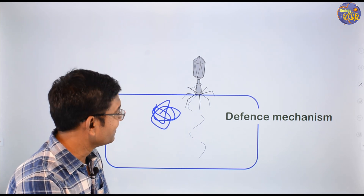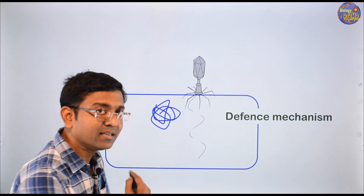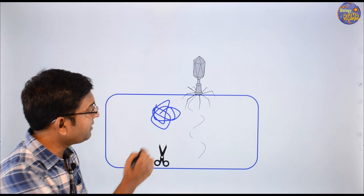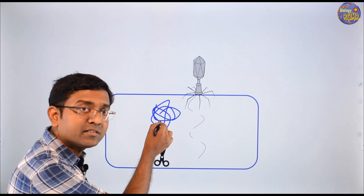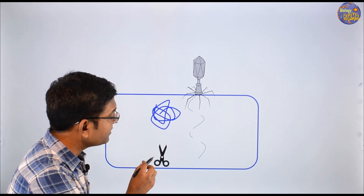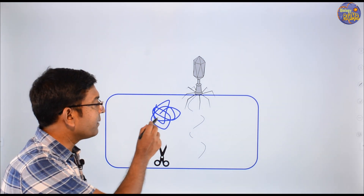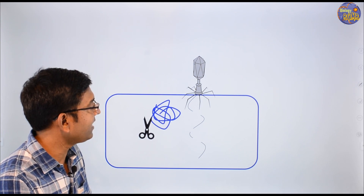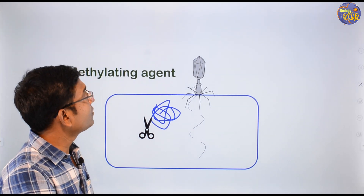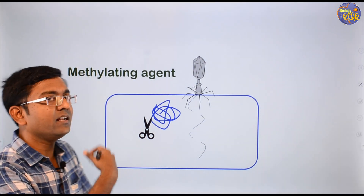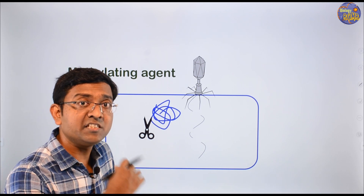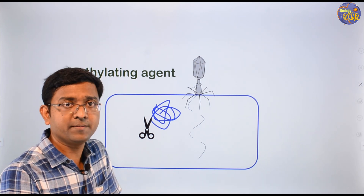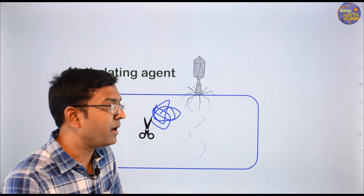The restriction endonuclease cuts DNA. Research has found that in bacteria, the chromosome has its own DNA, and the restriction endonuclease in the bacteria does not act on its own DNA. The reason is a methylating agent — the DNA has a methylating agent which protects it from being destroyed by restriction endonuclease. Researchers thought we can use this in biotechnology.